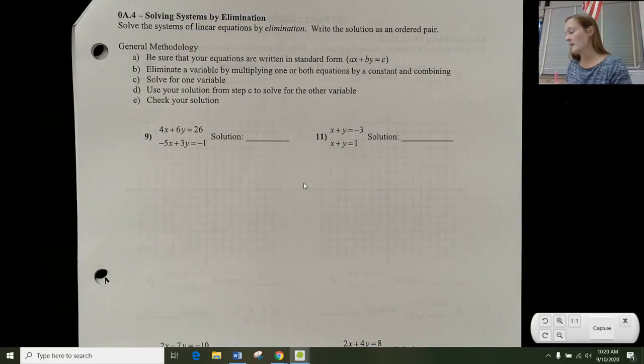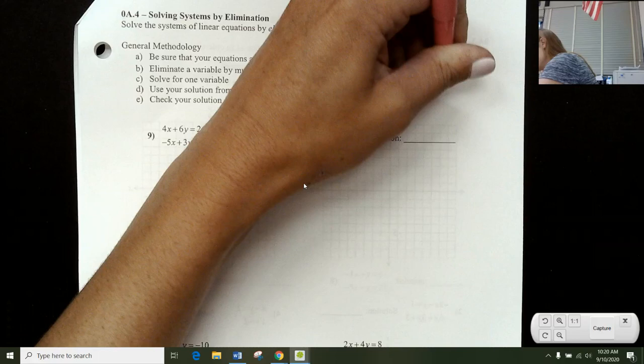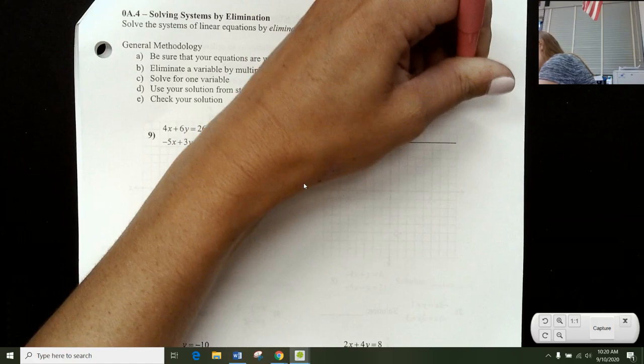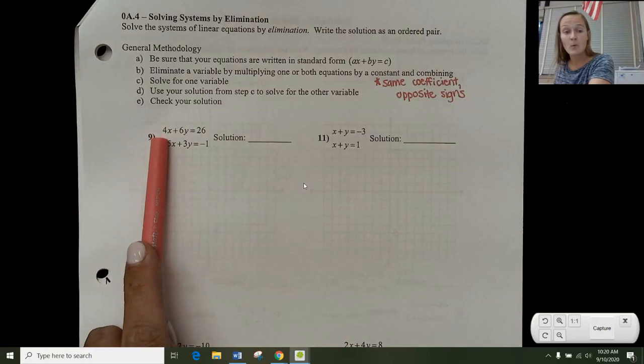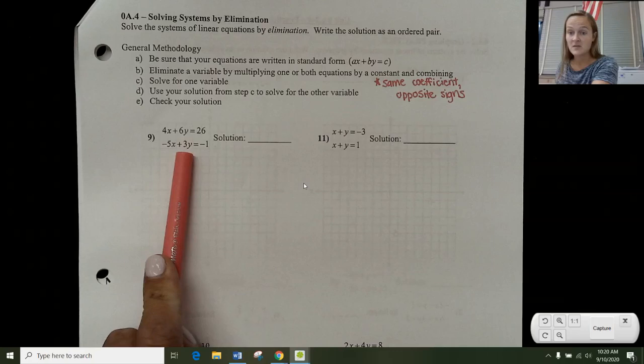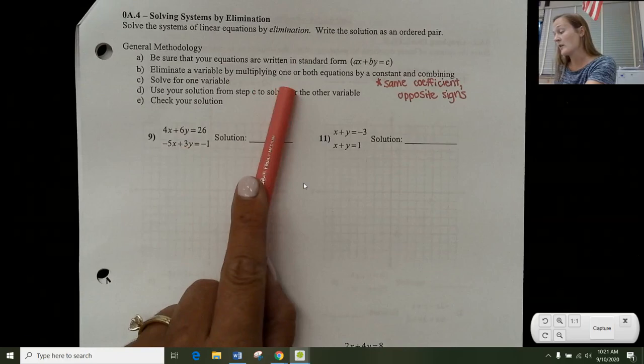So when I'm looking for how I'm going to eliminate, I'm looking for same coefficient, opposite signs for one given variable. So if you have the same coefficient opposite signs, that means that you can eliminate them very easily. So if you notice here, we have a 4X and a negative 5X. Those have opposite signs, but they're not the same coefficient. 6Y and 3Y are neither the same coefficient or opposite signs. So since nothing is already same coefficient opposite signs, we're looking to multiply one or both equations in order to have that appear.